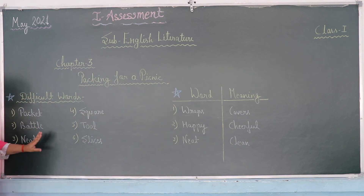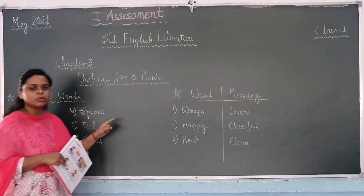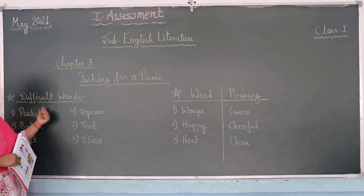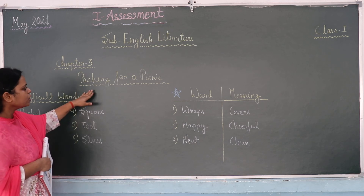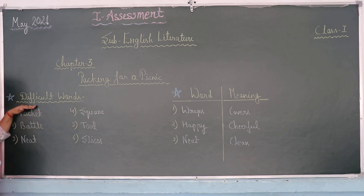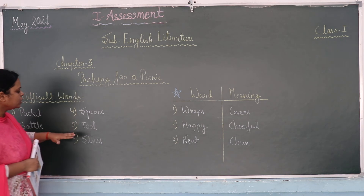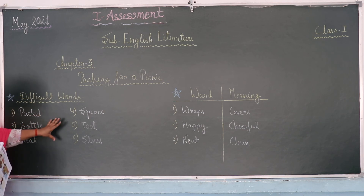Now we are going to do the written work for this chapter. Before starting, you should complete chapter number 1 and copy the chapter number 3 story in your notebook, then start writing. First, write the chapter number, then the chapter name: 'Packing for a Picnic.' Leave a line and write the little words. There are six spelling words: first is 'pate,' second is 'bottle,' third is 'neat,' fourth is 'spare,' fifth is 'clean,' and sixth is 'prices.' You have to learn all six spelling patterns of these words, learn them, and then write them.